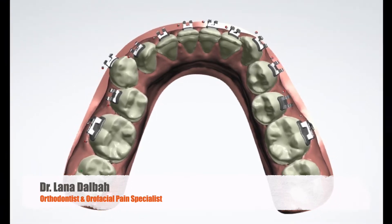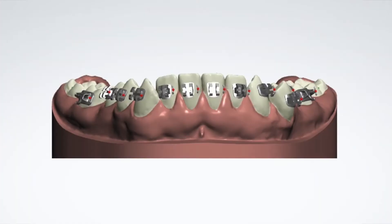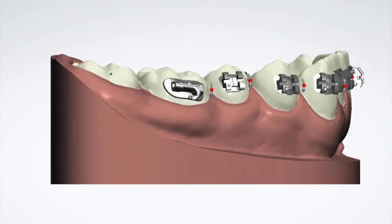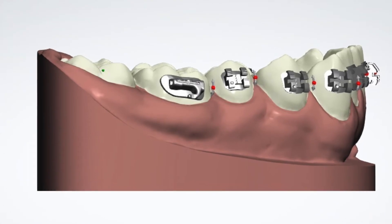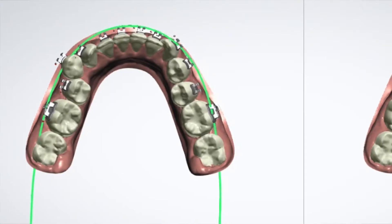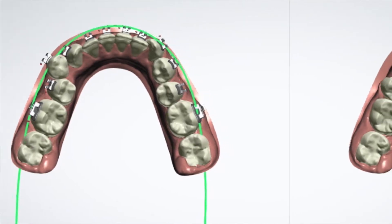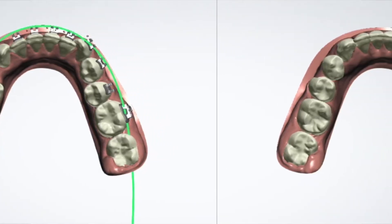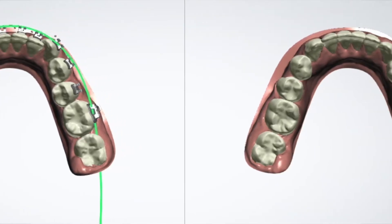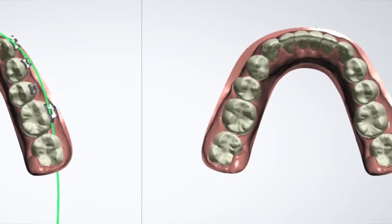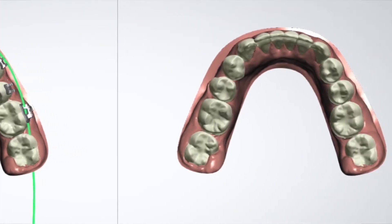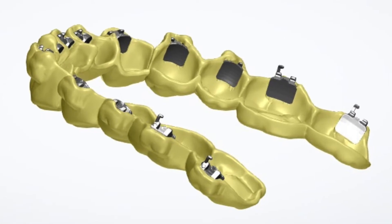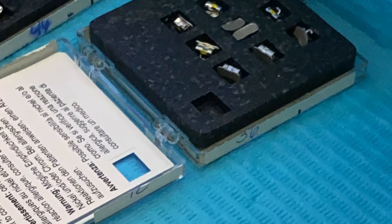A lot of people have asked me about the indirect bonding technique that I posted about on my Instagram. In this video I would like to share my experience with the different steps of the fully digitized indirect bonding. My interest in this technique arose because I wrote a chapter about digital orthodontics and came across this new technology, which allows us to place brackets on a virtual model, then 3D print the trays directly.